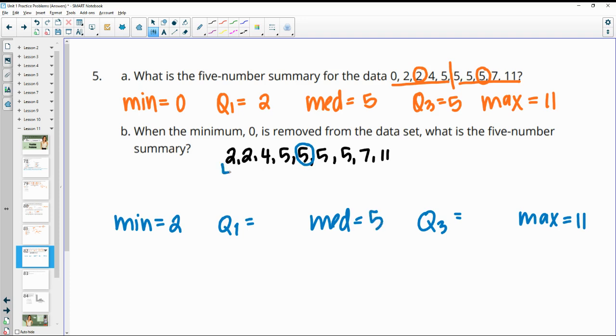And then we would look at this bottom half of the data, these four numbers, and look for the middle here. Well, the middle is going to be the two and the four. So now we need to average those. So we would do two plus four and then divide that by two. So six divided by two gives us three for Q1. Q3, we're going to be looking at the average of five and seven. So five plus seven is 12 divided by two gives us six for Q3.